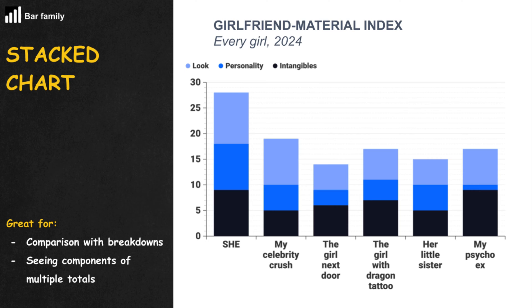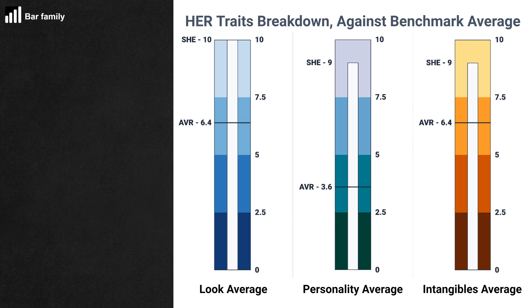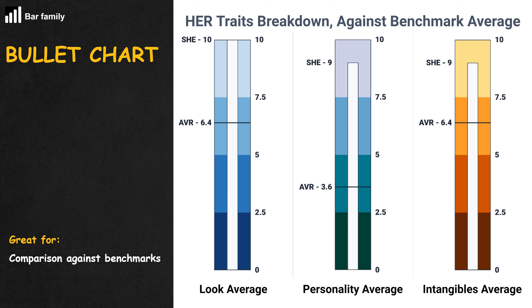When these bars or columns are stacked on top of each other, also to represent a total value, we have a stacked bar or column chart. When a bar or column chart is placed against some benchmark ranges, we have a bullet chart.